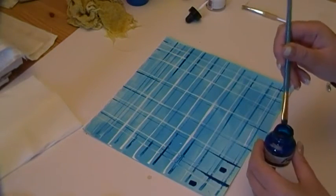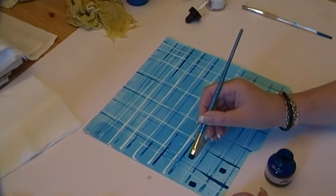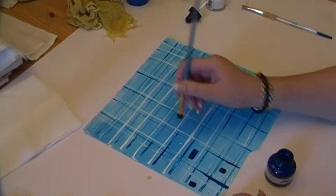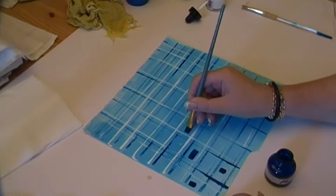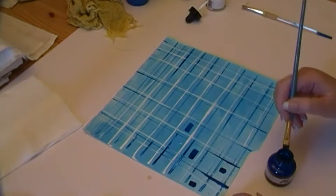So I'm just going to dab a few squares into the squares that I've already made. And I'm not concerned with the paint being less opaque in some than in others.